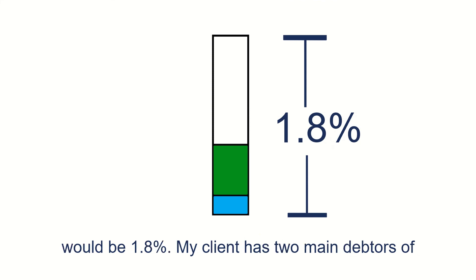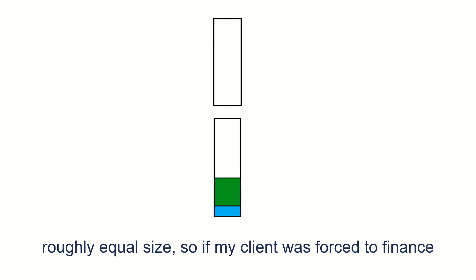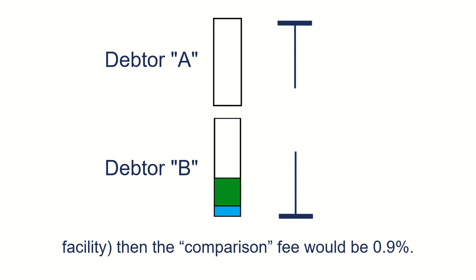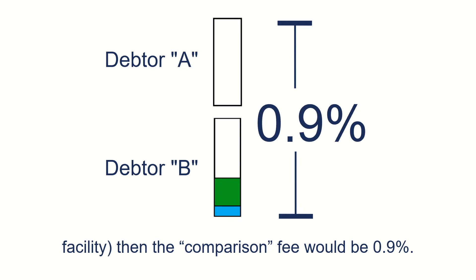My client has two main debtors of roughly equal size. So if my client was forced to finance all of their debtor book, as with a full-book facility, then the comparison fee would be 0.9%.